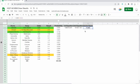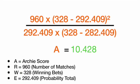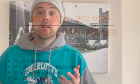For the full NBM draw system results from November to September: 960 matches times 328 winning bets minus 282.409 (probability total) squared, divided by the probability total times the number of matches minus the probability total — giving an Archie score of 10.428. I'm delighted with that result. It doesn't claim the system will make you profit 100% of the time, but it is built on statistical significance and proper data. It will return consistent, plannable outcomes, and that's something you need in your betting portfolio.